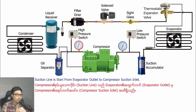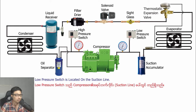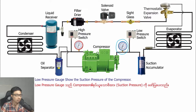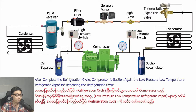The suction line runs from the evaporator outlet to the compressor suction inlet. The low pressure switch is located on the suction line. When the pressure drops low enough to reach a certain pressure, the low pressure switch opens and stops the compressor running. The low pressure gauge shows the suction pressure of the compressor. After completing the refrigeration cycle, the compressor again draws in the low pressure, low temperature refrigerant vapor to repeat the refrigeration cycle.